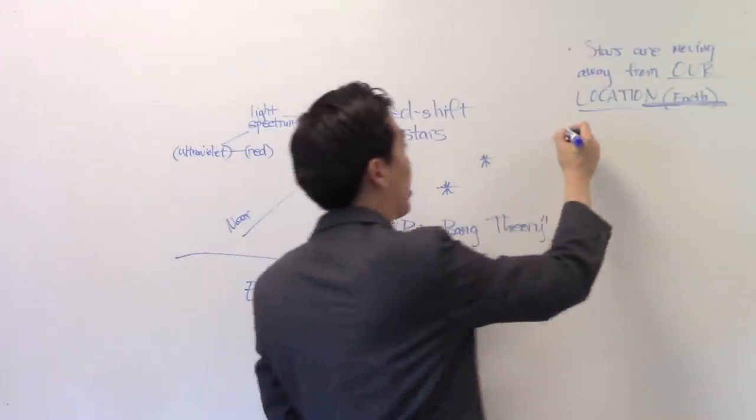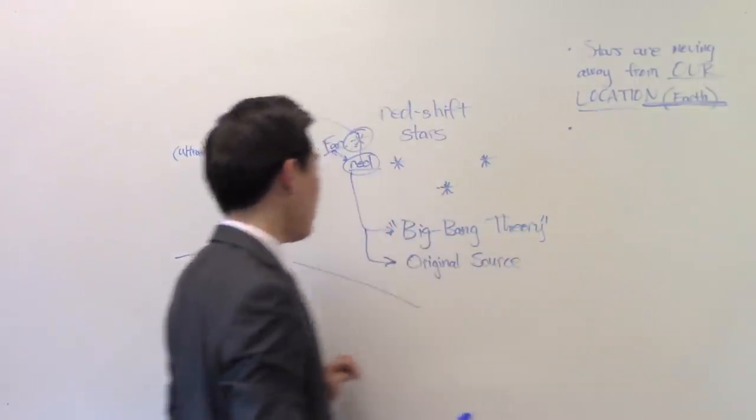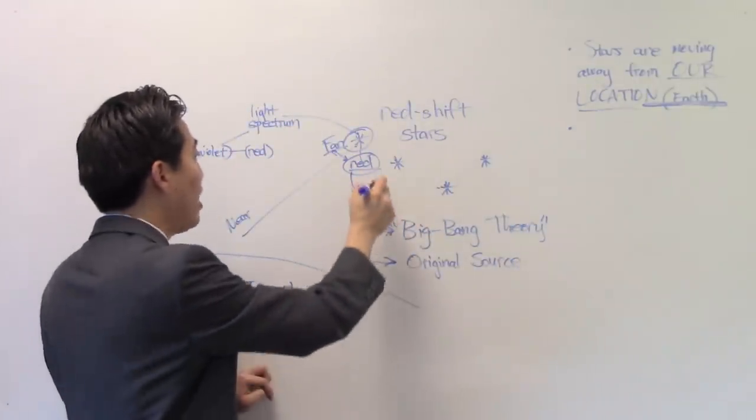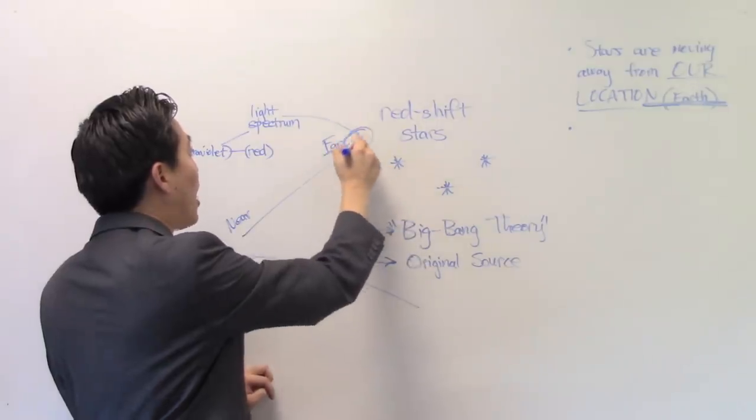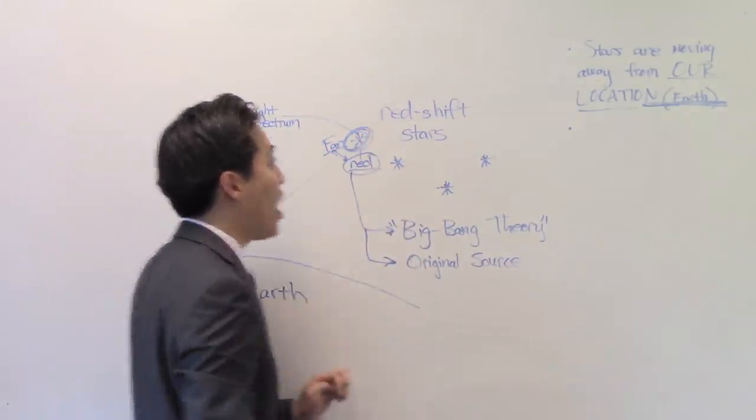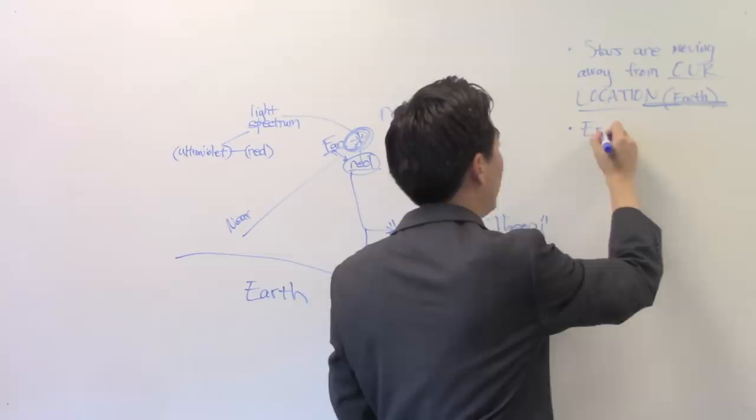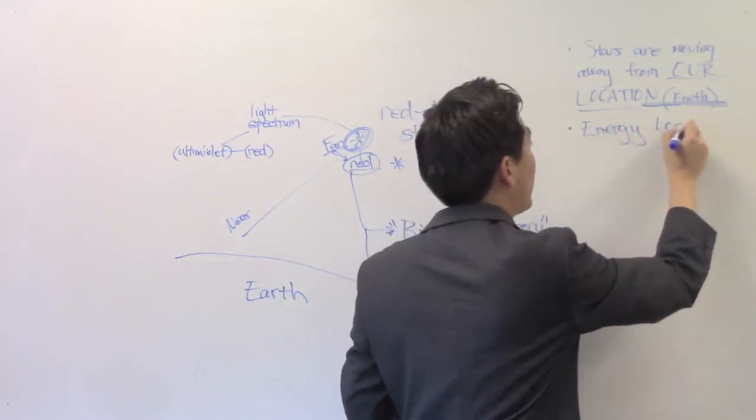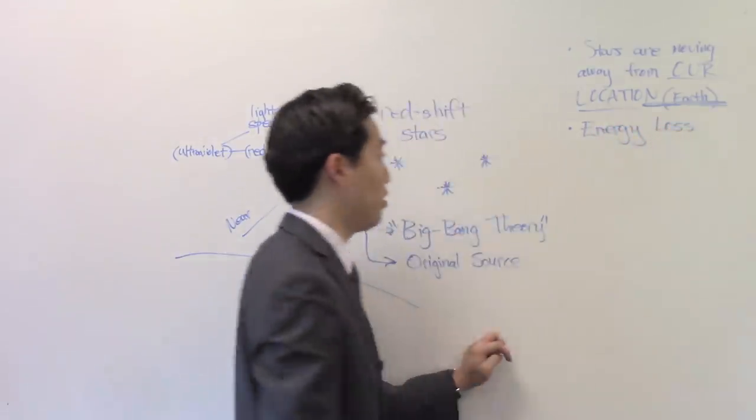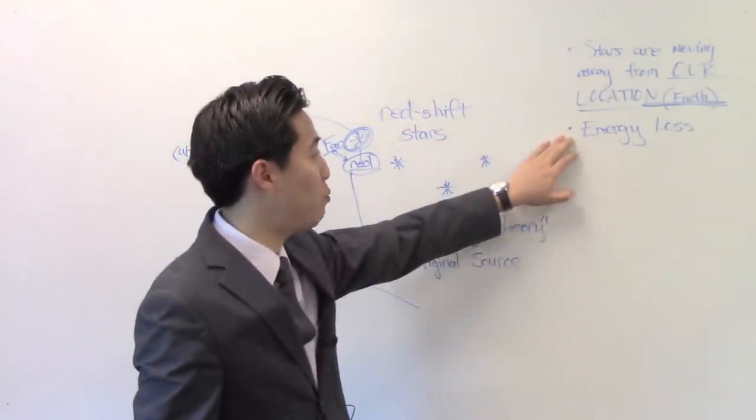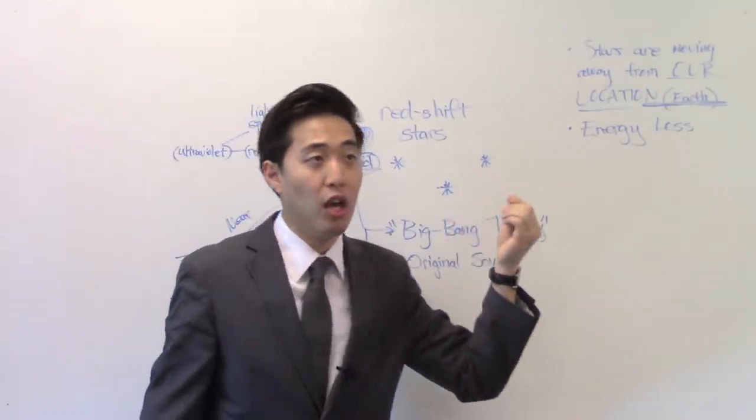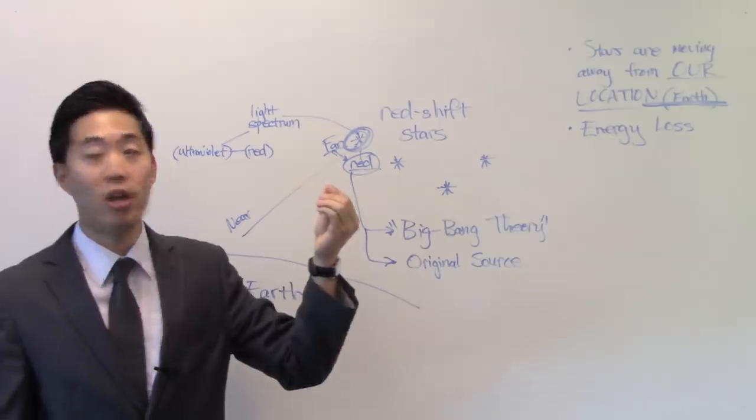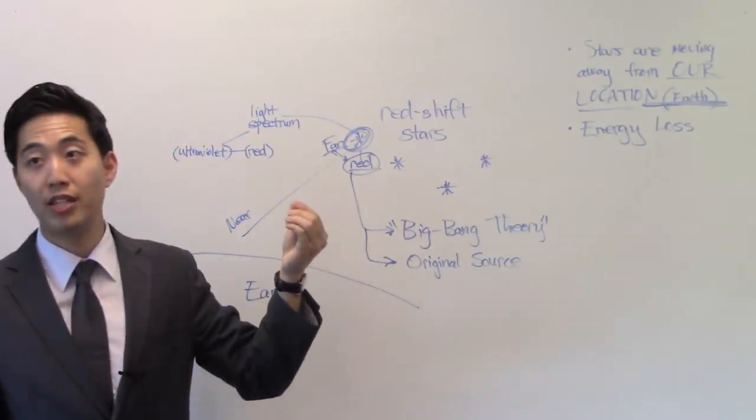But here's the second thing that's a problem. A second problem with this is that how do you not know that the reason why it's turning red, which is true, is because of energy loss? So this is a true scientific statement, or they'll call it scientific theory. This is a true point. If the star loses energy more and more, it becomes red. That's the thing.